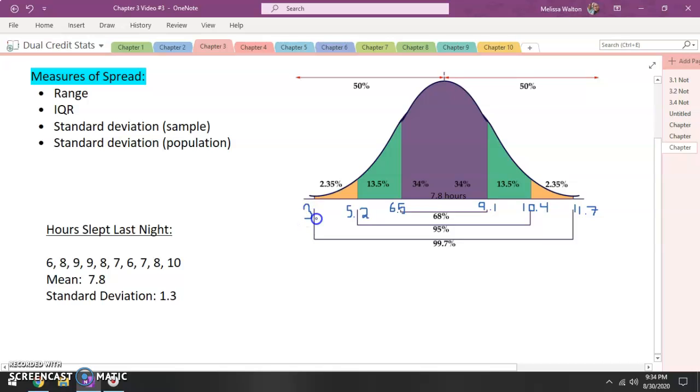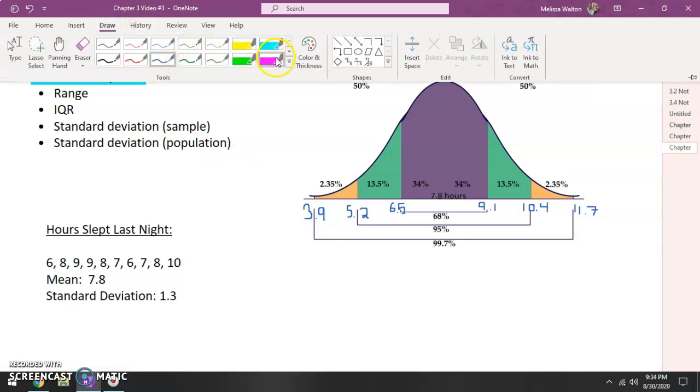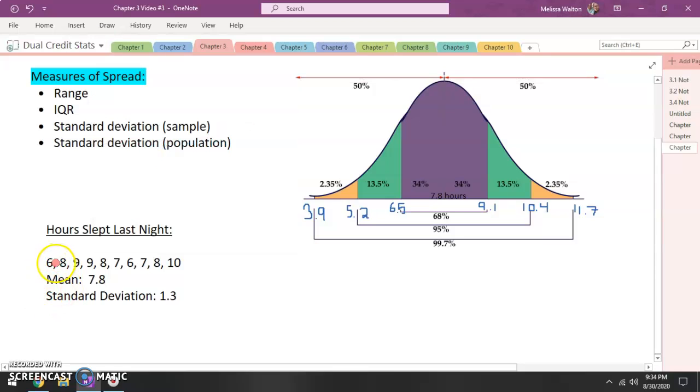All right, now typically we say that anything outside of two standard deviations is unusual. Let's go ahead and figure out where all of these people fit in. All right, well six hours they would be somewhere in here in this range. Eight hours they would be in this range. Nine hours they would also be in this range. Another nine hours. Another eight hours. Seven hours would be right here. Six hours is right here. Another seven hours. Another eight hours. And then finally a 10 hour would be over here.